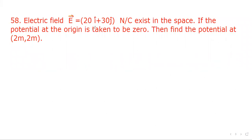Electric field E is given by 20i cap plus 30j cap newton per coulomb. If the potential at the origin is taken to be zero, then find the potential at 2,2 point.